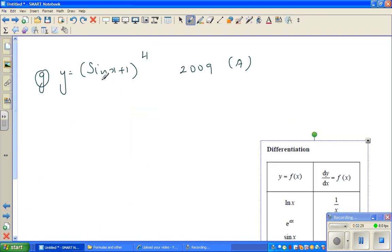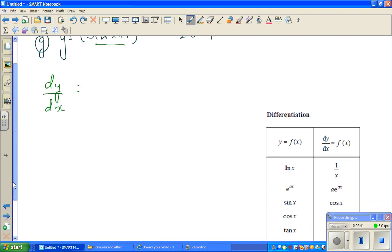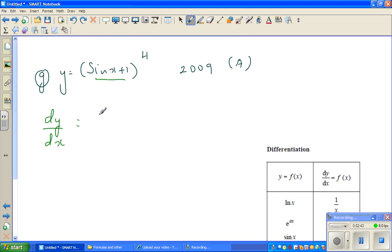Y is equal to sine x plus 1 to the power of 4. So first I'll differentiate the inside. So dy by dx. The differentiation of sine is cos. So first I'll differentiate that to cos x times the whole function which is 4 times sine x plus 1 to the power 3. And that's your answer.